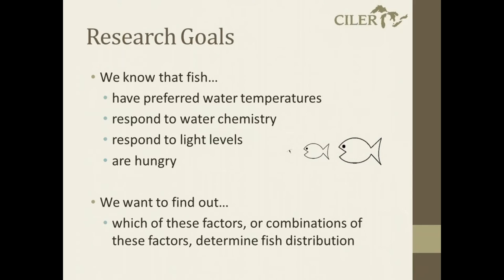So going into this, some things that we know about fish: they have preferred water temperatures, they respond to water chemistry, they respond to light levels, and they go where the food is. So with all of these factors in mind, we want to find out which of them, or which combinations of these factors, determine fish distribution. And if we can get a good idea of these relationships, then that will help us to better predict or develop models for predicting fish distribution.